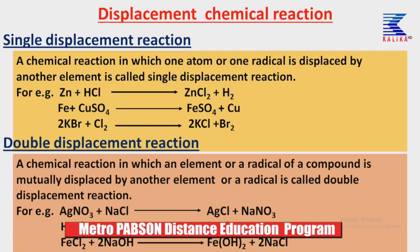The third example is the reaction between chlorine molecule and potassium bromide — chlorine displaces bromine from potassium bromide, giving potassium chloride and bromine. Double displacement reaction is different from single displacement in that two different atoms from two different reactant molecules are mutually displaced. A chemical reaction in which an element or a radical of a compound is mutually displaced by another element or a radical is called a double displacement reaction.